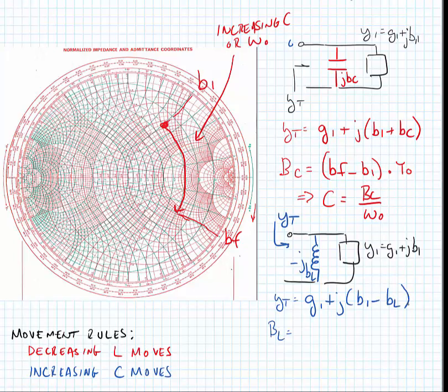We can then find the value of the inductive susceptance as bf minus b initial, and de-normalize it by the characteristic admittance.